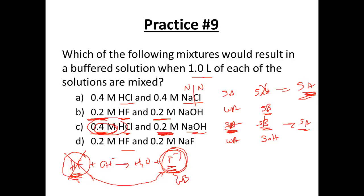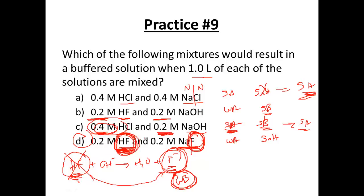A buffer can be acidic or basic, but when you only have a weak base present — no conjugate acid — you can't have a buffer. You need both conjugate acid-base pairs together. Option D is the one that works because the salt contains the conjugate base of the weak acid HF. We have HF present and we've supplied its conjugate base ion F-, so both are present and that creates the buffer. A buffer needs a weak acid or weak base and their respective conjugates present at the same time.